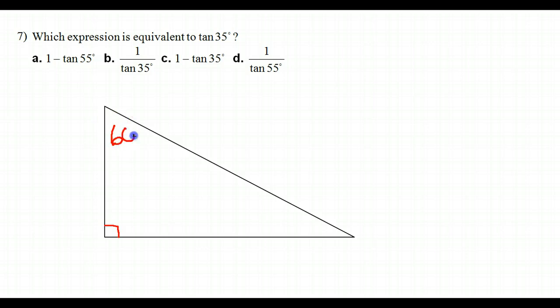Say if this was 60 degrees. Guess what this angle down here would be. That's right, 30 degrees. It's a 30, 60, 90 triangle.